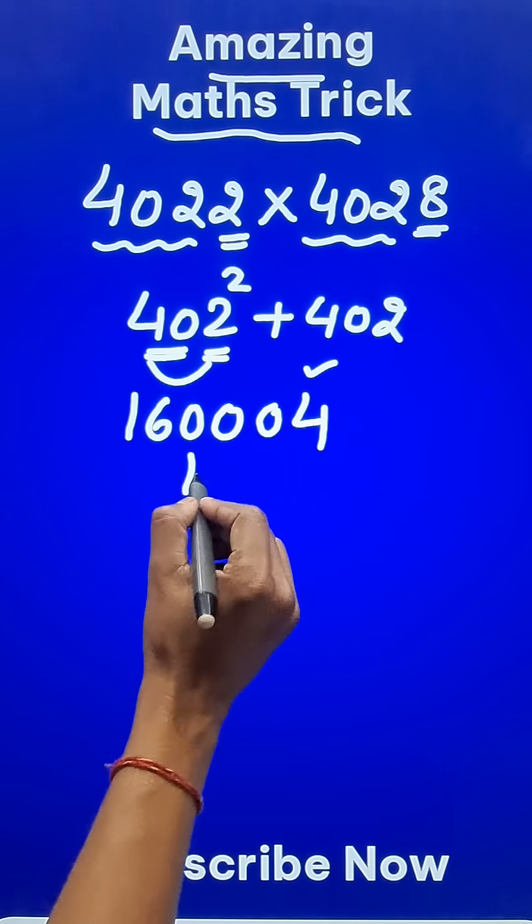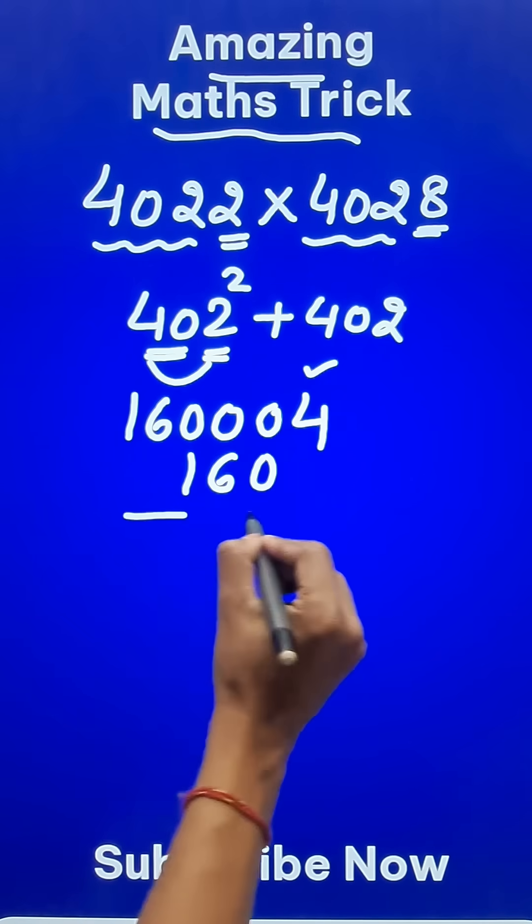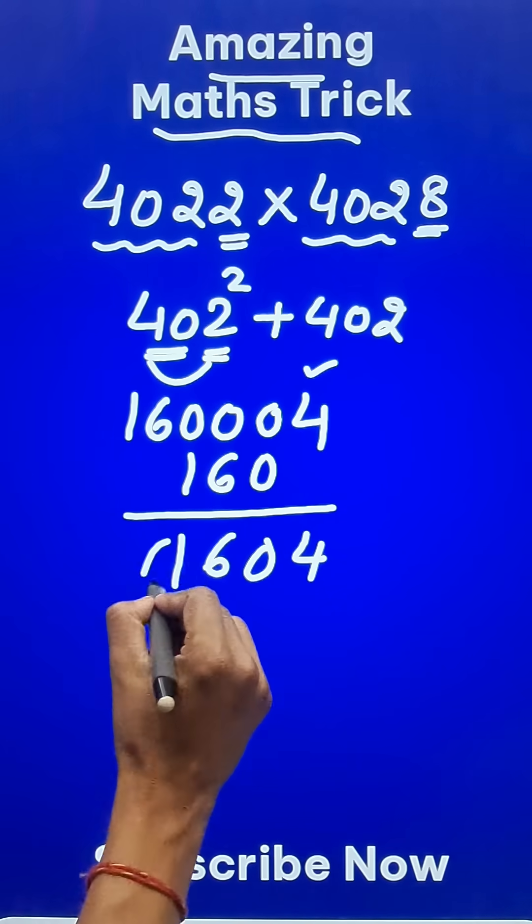Leaving one digit from the right hand side, I will write 160 below this and add them. So we get 161604.